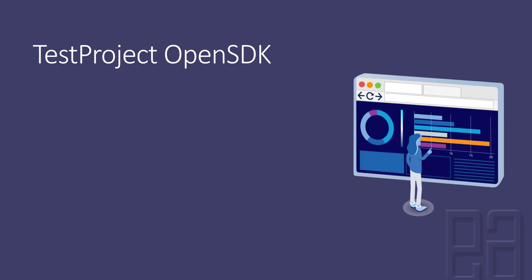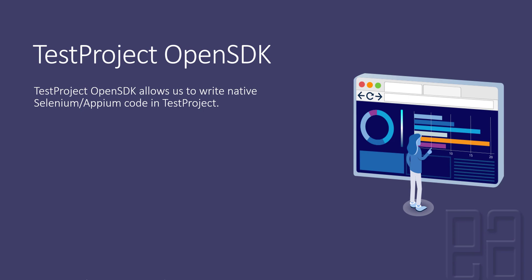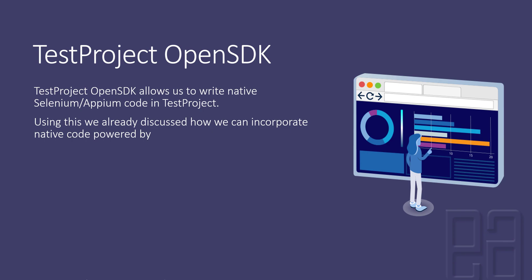Test project's open SDK will help us write native Selenium and Appium code in test project, which means we don't really have to incorporate test project specific code within our existing code. All we need to do is use the test project's open SDK library within our project and it starts working pretty much like how it used to work with our existing code base.